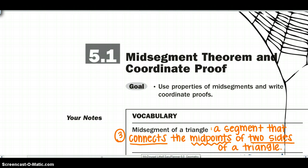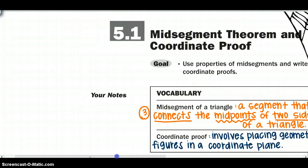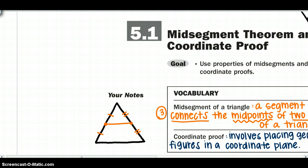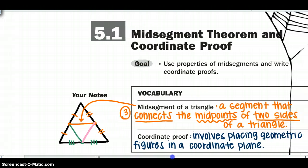If at any point you need to slow the video down, pause it to write something, or rewind, that is available. In my triangle, to find the mid-segment I need to find the midpoint of two sides. The midpoint is in the middle of the segment and creates two congruent parts. If I connect the two midpoints of two sides, that segment is called the mid-segment. I can find a second and third mid-segment the same way.